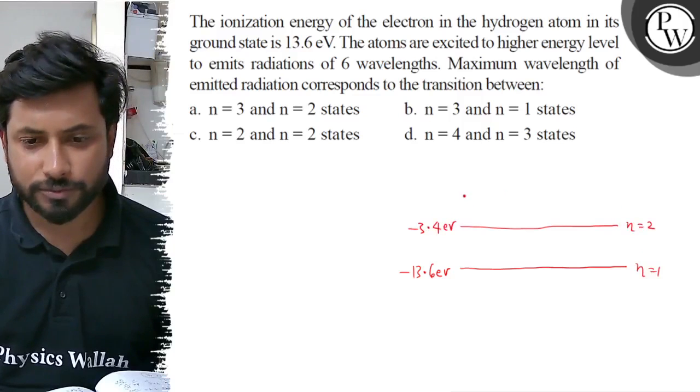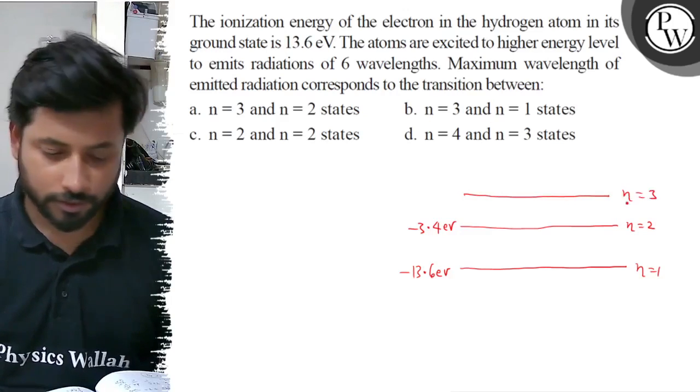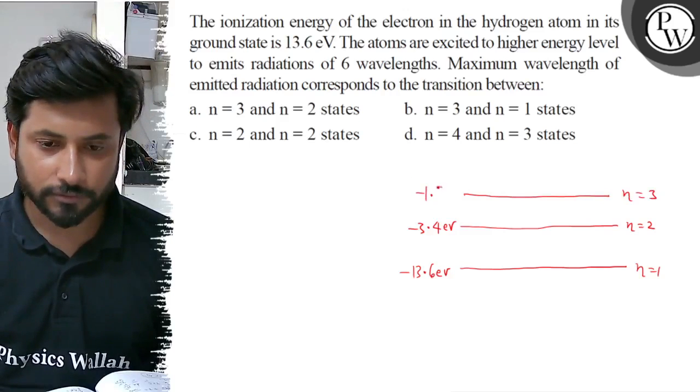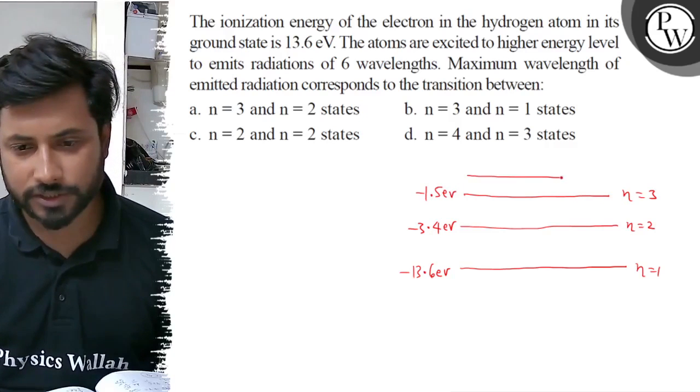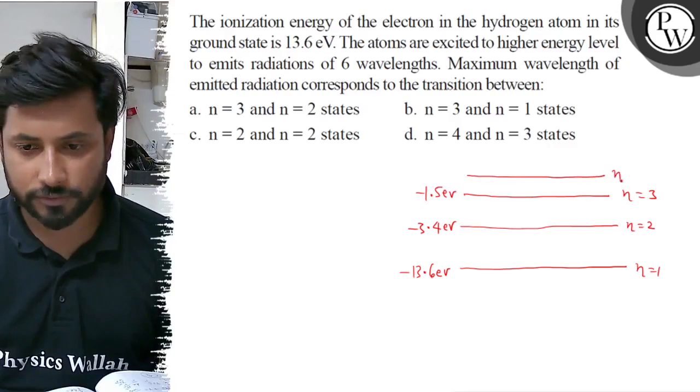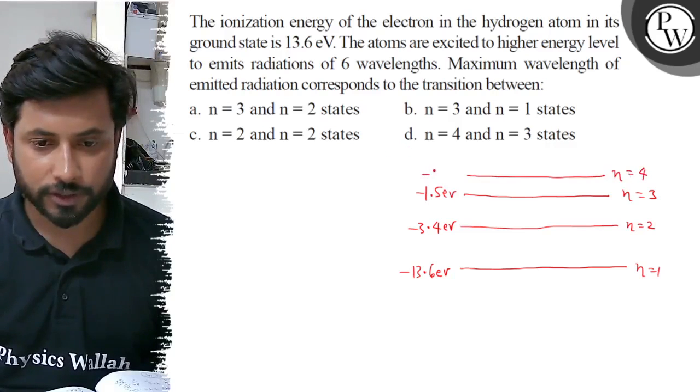Just above that is n equals to 3, and that is minus 1.5 electron volt. And just above that, n equals to 4, that is minus 0.85 electron volt.